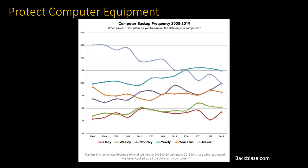Here's data on backup frequency from Backblaze - a great and pretty affordable backup company. Looking at computer backup frequency from 2008 to 2019, we see a decrease in people who never backed up, which is good. But most importantly, look at how many people back up daily: about seven to eight percent. Weekly: eight percent. Monthly: around seventeen percent. Yearly: around twenty to twenty-five percent. Imagine - only about twenty-five percent of people are backing up their computer even once a year.